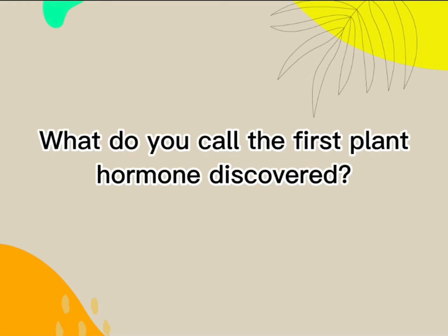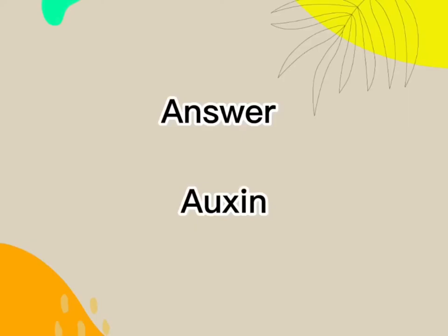What do you call the first plant hormone discovered? Answer: Auxin.